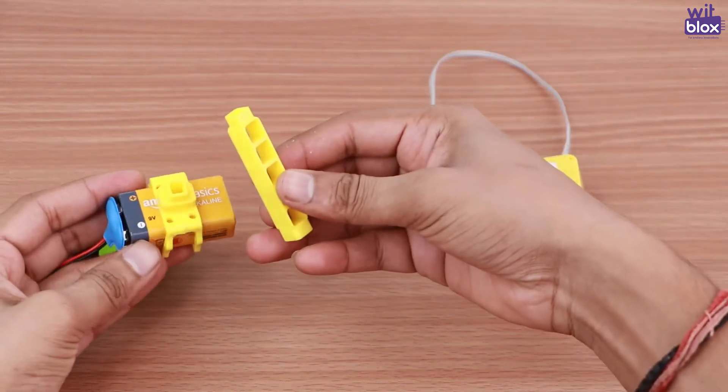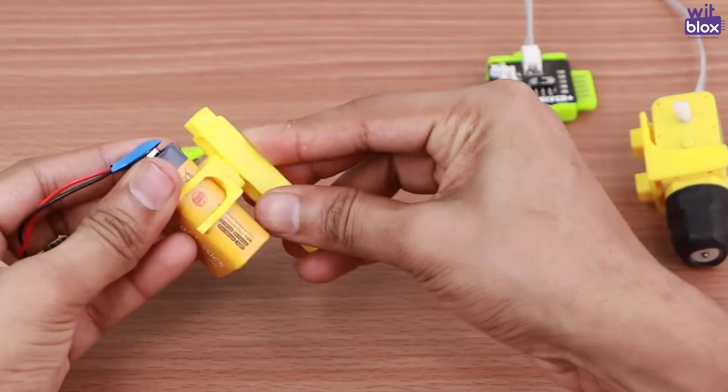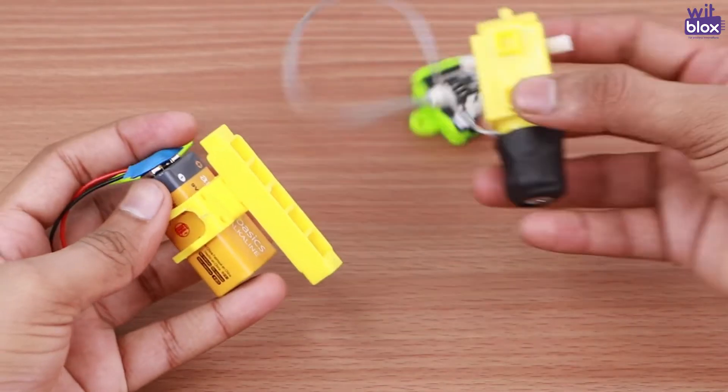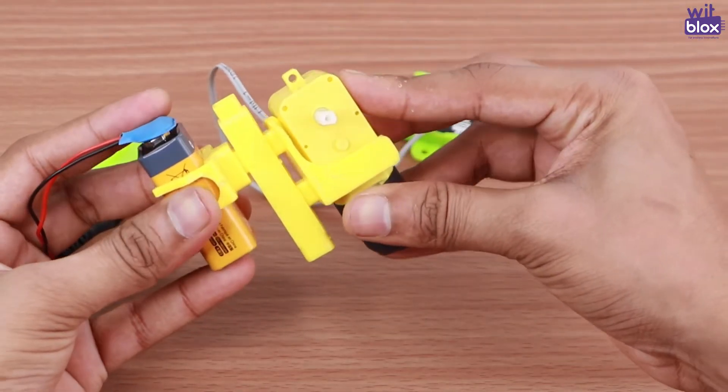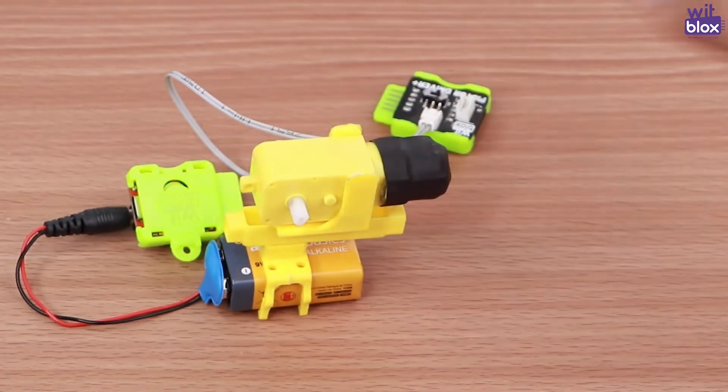We will add the weight of the battery at the base of the snail robot to make it more stable. So I have attached battery with the battery holder to a 5-hole beam and have attached motor on the other side.